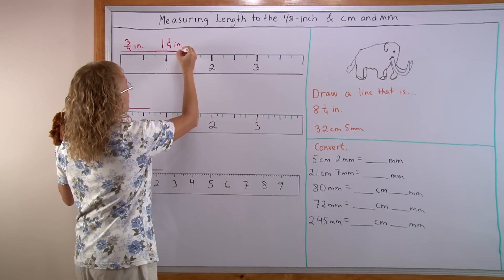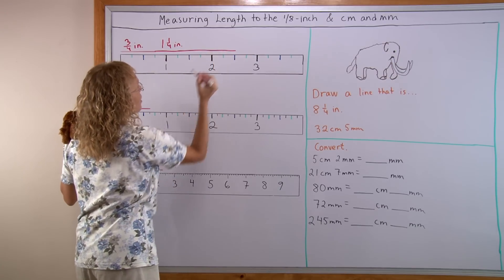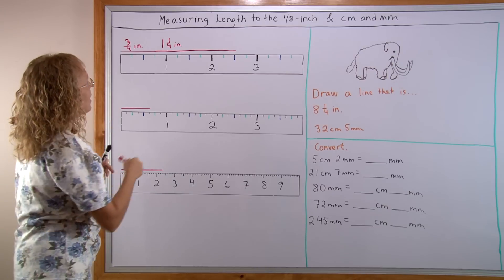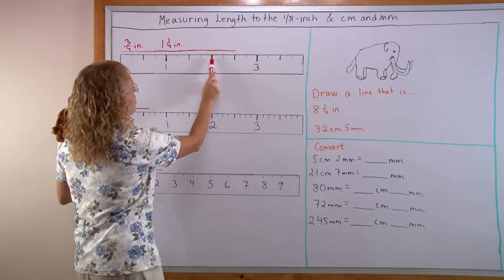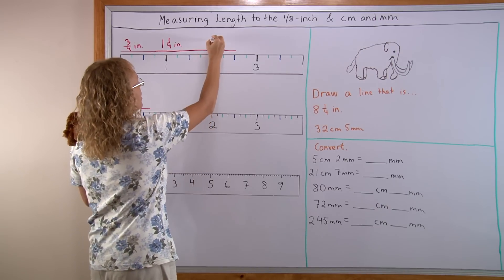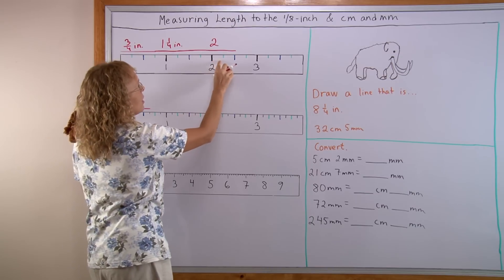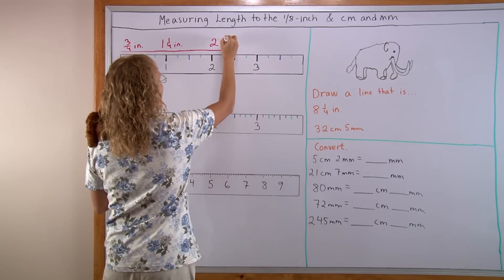And let's make it all the way here. How long is it now? We go past the 2 inch mark. So it is 2 inches and the blue mark is the 1/2 inch mark. 2 1/2.